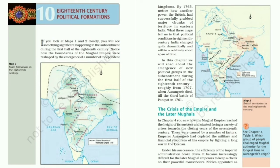The 18th century is characterized as a period of political and economic change and transformation in India. The Mughal emperors after Aurangzeb are referred to as the later Mughals. They were weak rulers. With the decline in the power and authority of the Mughals, a number of independent regional kingdoms like the Jats and the Rajputs emerged.